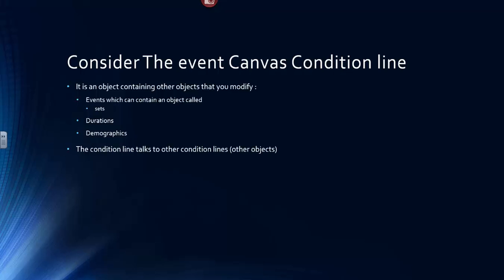talks to other objects, other Condition Lines on the Event Canvas. The result of that conversation between Condition Lines is an object that is then acted upon by the Index Event Line, yet another object.